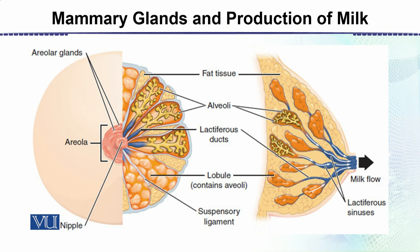Starting from the outside, there is fat tissue. The lactating structure and tissue inside doesn't vary too much. The alveoli group together to form the lobules. After that, the lactiferous ducts come, and very close to the outside near the nipple, there are the lactiferous sinuses where milk is temporarily collected before coming out.